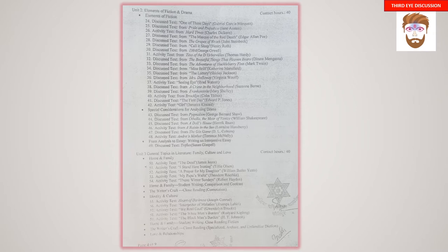Unit 3: General Topics of Literature — Family, Culture and Love. Contact hour 40 hours. Texts include: 'The Dead' by James Joyce, 'I Stand Here Ironing' by Tillie Olsen, 'A Prayer for My Daughter' by W.B. Yeats, 'My Papa's Waltz' by Theodore Roethke, 'Those Winter Sundays' by Robert Hayden, 'Heart of Darkness' by Joseph Conrad, 'Interpreter of Maladies' by Jhumpa Lahiri, 'We Real Cool' by Gwendolyn Brooks, 'The White Man's Burden' by Rudyard Kipling, 'The Black Man's Burden' by S.E. Johnson, and 'The Importance of Being Earnest' by Oscar Wilde.